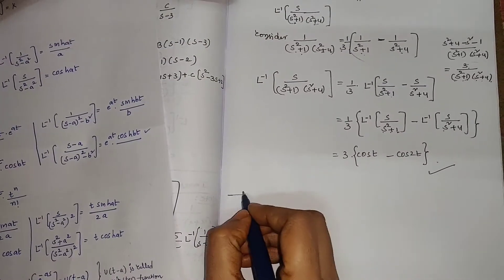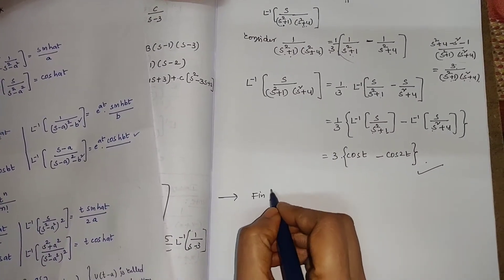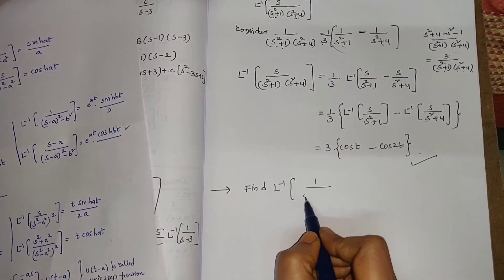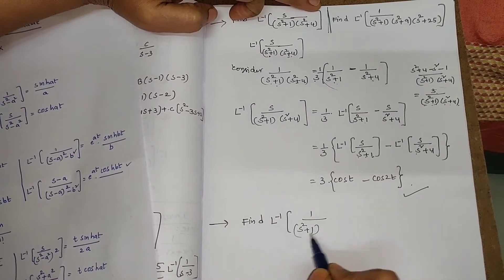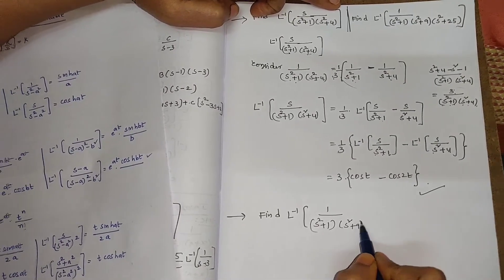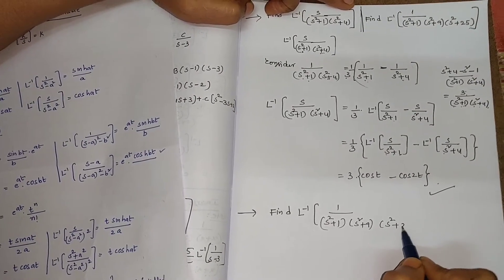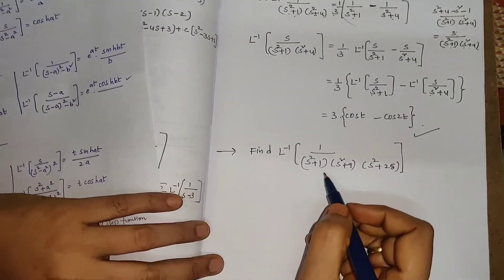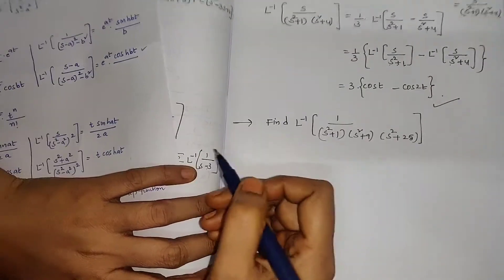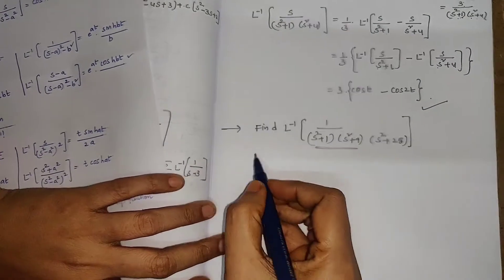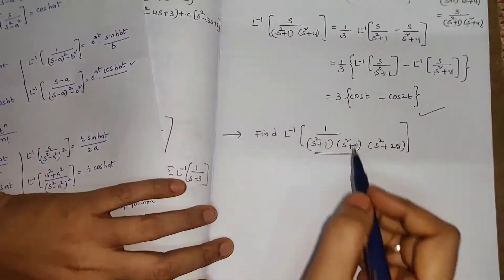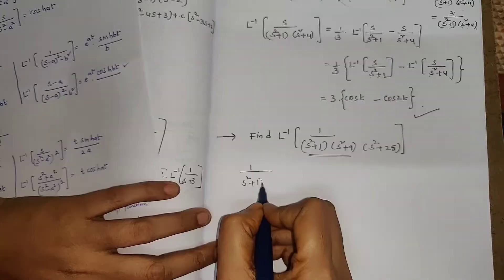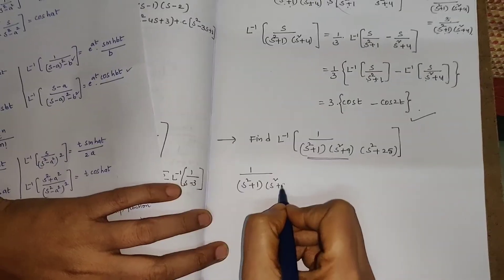The next problem is: find L inverse of 1 / [(S² + 1)(S² + 9)(S² + 25)]. To find this inverse Laplace transform, first consider the first two factors. The same logic is going to be applied here. So, 1 / [(S² + 1)(S² + 9)] in the denominator has quadratic polynomials.